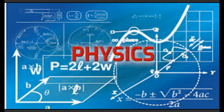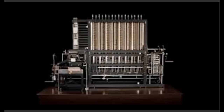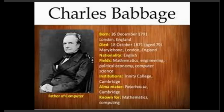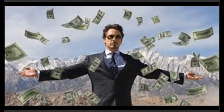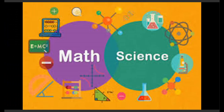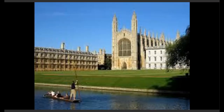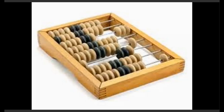He was the first scientist who thought about the mechanical computer. Talking about his early life, he was born in Devonshire and studied in Cambridge. He was very interested in mathematics and had thought that he was born to be a scientist. He emphasized the efficiency of manufacturing. During his Cambridge studies, he realized that mathematical tables contained many errors — these tables were human-made — and he planned to develop a calculator that prevents human mistakes.